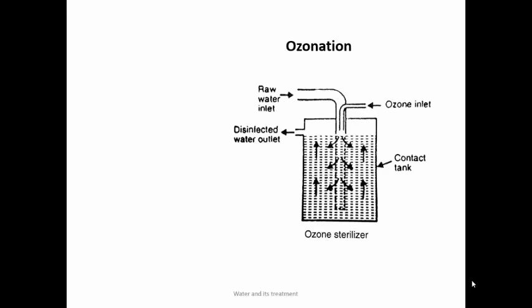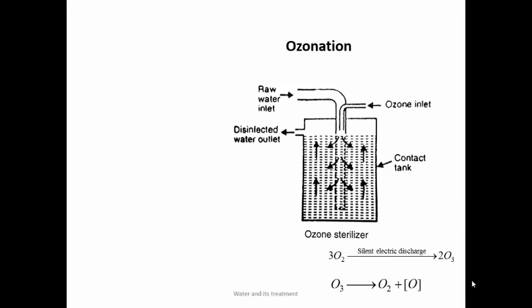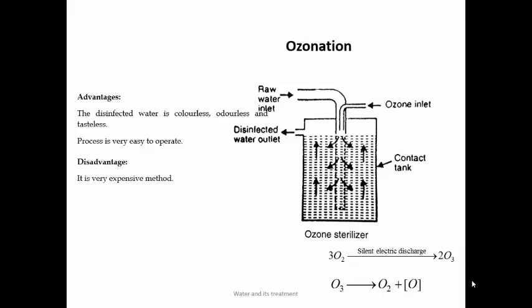The best method for removal of microorganisms is ozonation. Ozone is produced by silent electric discharge with oxygen gas. O₃ is unstable, decomposing into O₂ plus nascent oxygen. Nascent oxygen deactivates enzymes and kills bacteria. Raw water and ozone are mixed in a contact tank, and disinfected water is collected from an outlet at the top. The disinfected water is colorless, odorless, and tasteless. The process is easy to operate. The only disadvantage is that the method is very expensive.